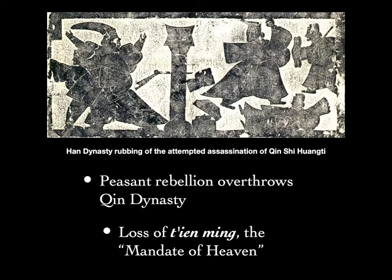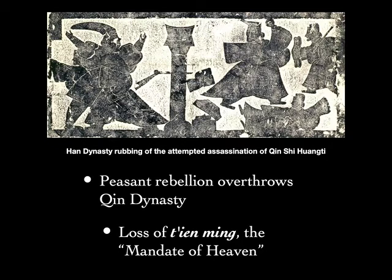This failure of the Qin dynasty to maintain prosperity and secure peace was an idea the people commonly believed in — a sense of the loss of the mandate of heaven, or loss of Tianming. When a ruler, considered the highest representative of the people to the gods, loses this mandate of heaven, it is the responsibility of the people to overthrow his rule. This is a very powerful idea that resurfaces in Chinese history for thousands of years: the people are willing to be led, even under absolute rule with minimal rights, as long as the emperor can secure prosperity, peace, and stability.